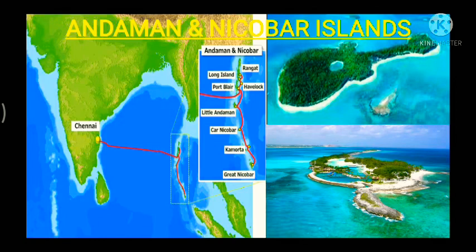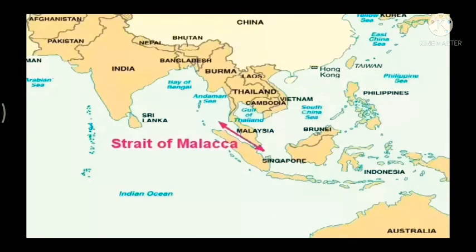The Andaman and Nicobar Islands are an elongated chain of islands located in the Bay of Bengal, extending from north to south. The entire group is divided into two broad categories: the Andaman in the north and the Nicobar in the south. It is believed these islands are an elevated portion of submarine mountains. About 572 islands are found in this region, and many are separated by the 10-degree and 6-degree water channels.